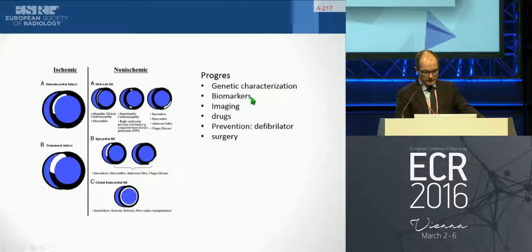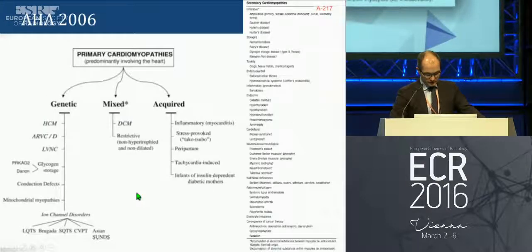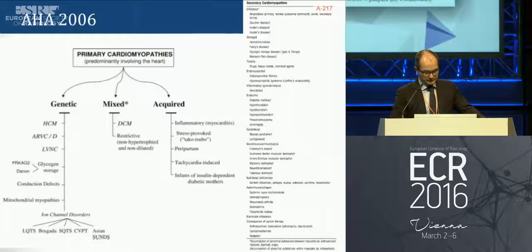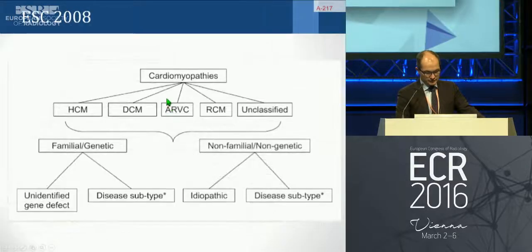We have seen advances in biomarkers, imaging, drugs, prevention, treatment with defibrillators, and surgery. An older AHA classification from 2006 defined phenotype, but also classified disease based on origin: genetic, mixed, and acquired. A more recent classification includes both the phenotype and the etiology of the disease.